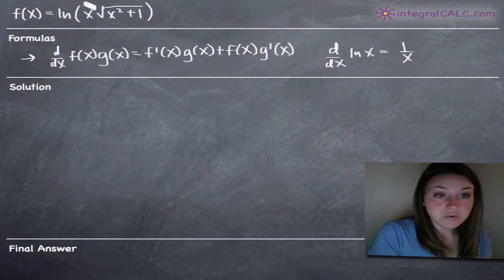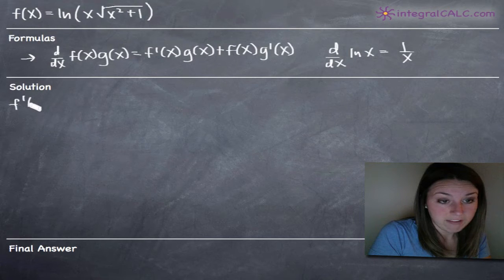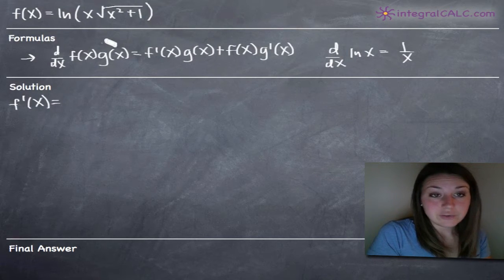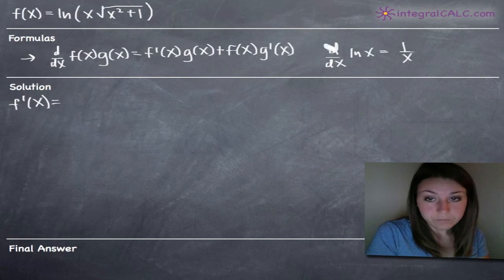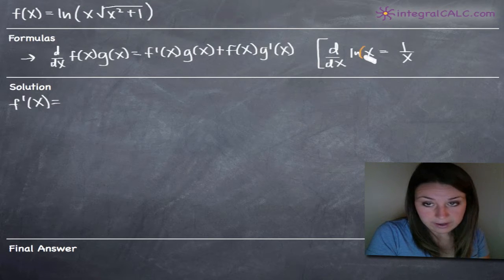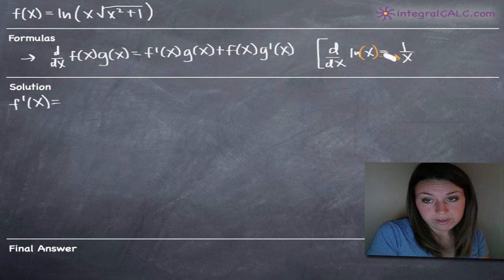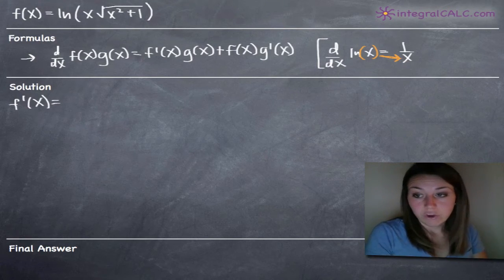To take the derivative of this function, the derivative of f of x is always f prime of x. Whenever we're taking the derivative of something involving the natural log or ln, we're going to be referring to this formula here. What this tells us is that whatever is inside the natural log function goes straight to the denominator — we have 1 in the numerator and everything inside that natural log goes to the denominator.